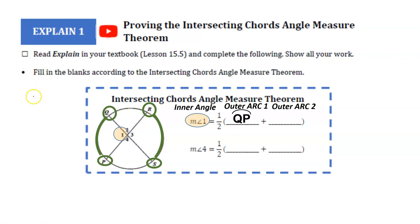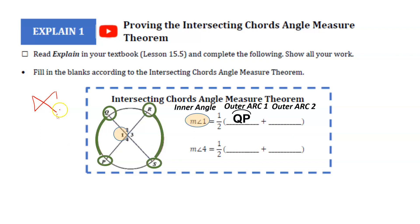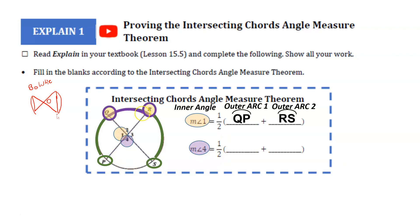It kind of forms like a bow tie. Essentially, this arc and that arc — we add those arcs together and take half to equal the angle in the middle. We can also find angle 4 by doing the same thing: taking half of arc measures QR and PS.